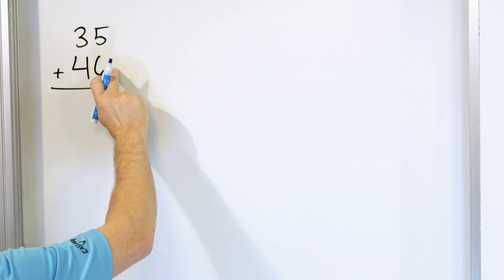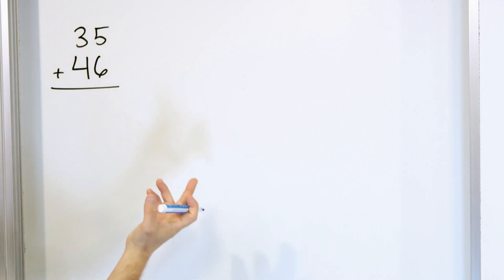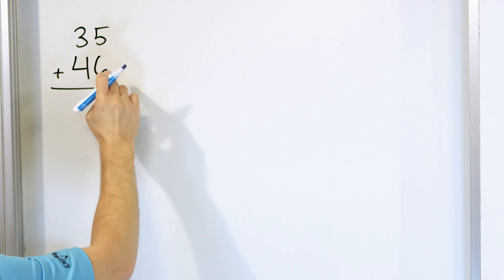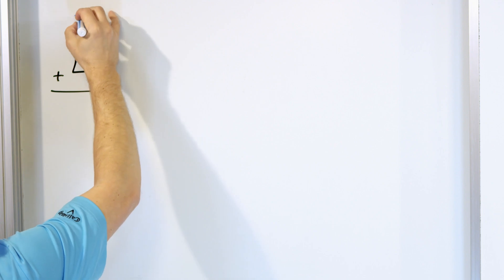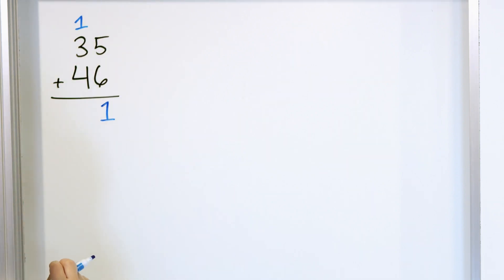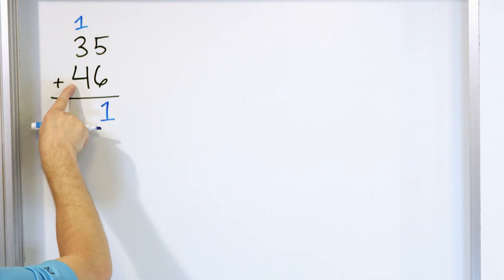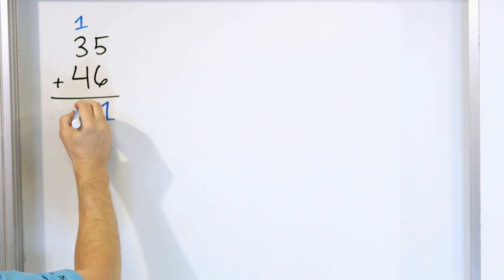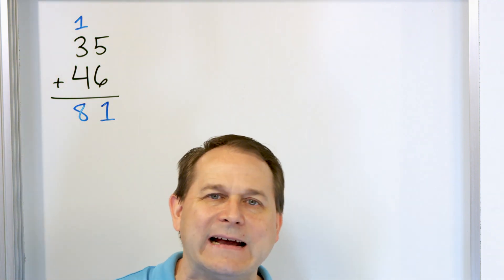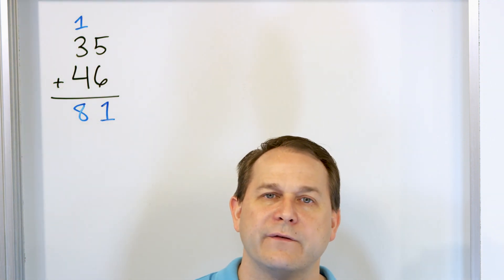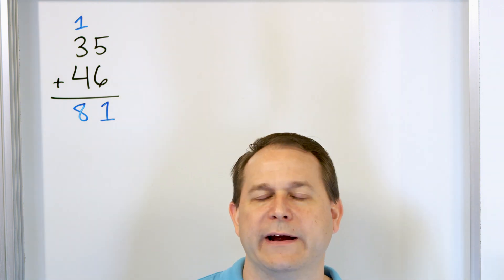So 6 plus 5 is 11, because 5 plus 5 is 10 and this is one more, so it has to be 11. We put a 1 and carry a 1 to the next column. 3 plus 1 is 4, so this is 4. 4 plus 4 is 8, and so the exact answer is 81. That's the real answer that we know is correct for math.